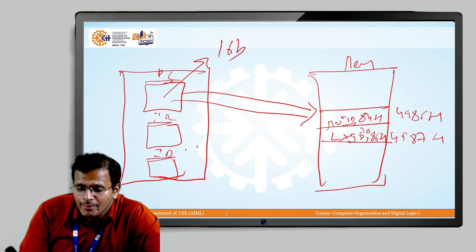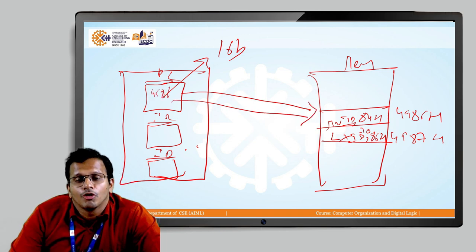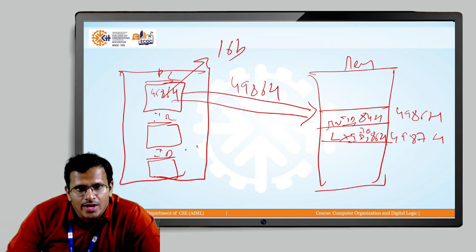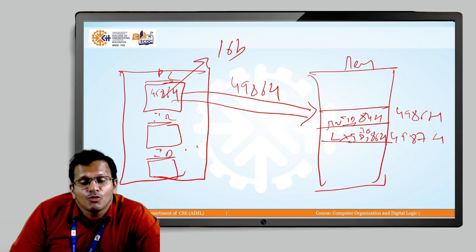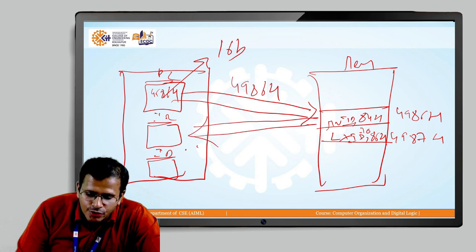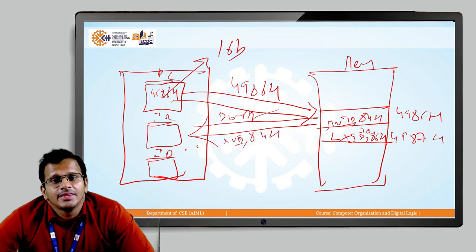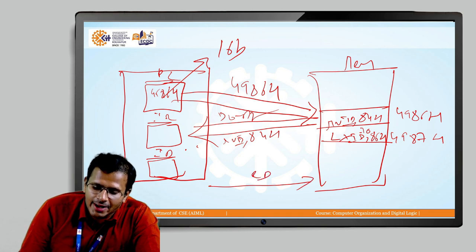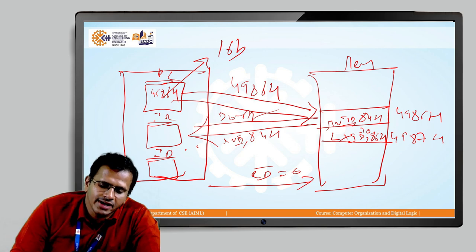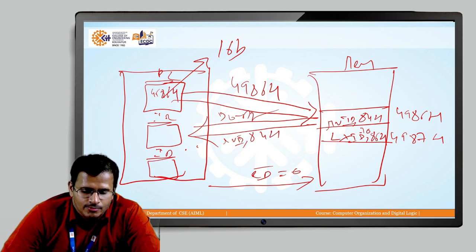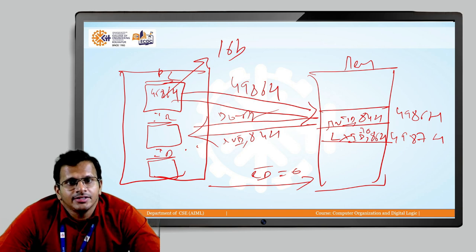The value 4986H from the Program Counter is passed on through the address lines A0 to A15. Once we get the location, the instruction MVI B, 84H is passed through the data lines D0 to D7 to the microprocessor. To read the content from the memory to the microprocessor, the Read bar control signal must also be 0. Once the content is passed to the Instruction Register, it is decoded in the Instruction Decoder so that it can be understood by the machine.